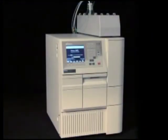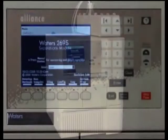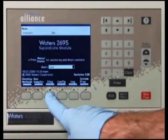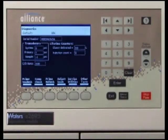Before performing this procedure, ensure that the gradient proportioning valve is turned off to prevent siphoning of mobile phase. To do this, press the Diagnostics key from the 2695 main screen.